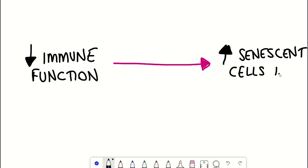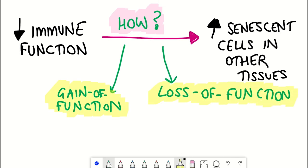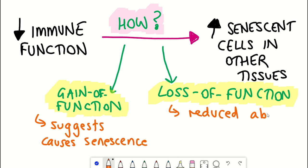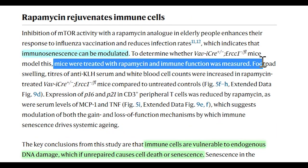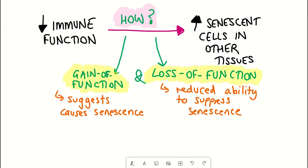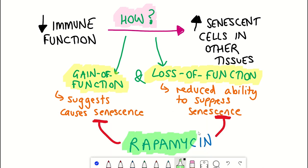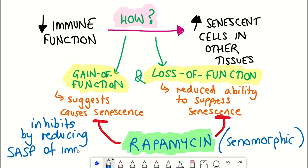So far the work supports a connection between a senescent immune system driving systemic ageing by both a loss of function and a gain of function. In terms of therapeutic relevance, in the last part of this paper they gave three-month-old mice rapamycin for six weeks and saw that it rescued the loss of function and suppressed the gain of function impacts. Given that rapamycin is considered a senomorphic — suppressing the secretory phenotype — it suggests that reduced secretion of inflammatory factors could be behind the cell non-autonomous effects, whereby the SASP of immune cells could be driving senescence in other tissues, though this can't be concluded for certain.